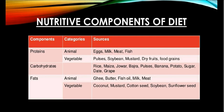Vegetable protein refers to proteins that we get from vegetables. Vegetable protein is usually found in various types of pulses, beans, soybean, mustard, green peas, nuts, groundnuts, dry fruits and food grains.